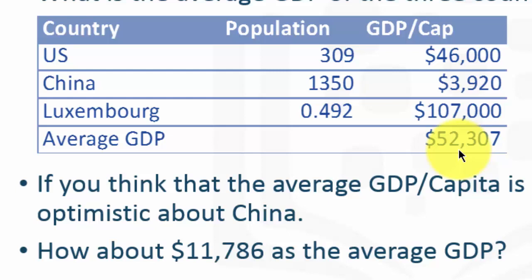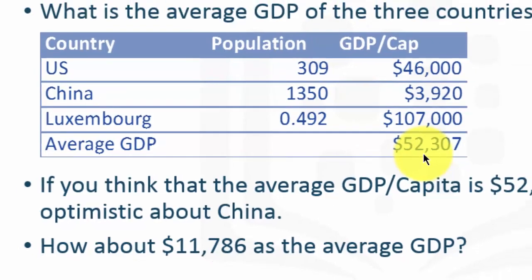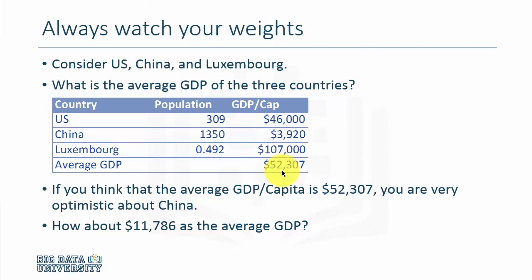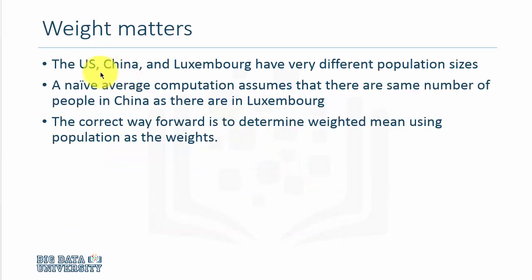$52,000 is rather optimistic when it comes to an average GDP for the three countries. It's more like $11,786. And here's the reason: the three countries have very different population sizes. Therefore, a naive aggregation would result in a wrong inference and wrong statistics. The correct way is to weight the average per capita GDP by the population for each country.